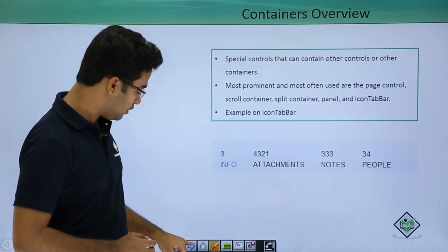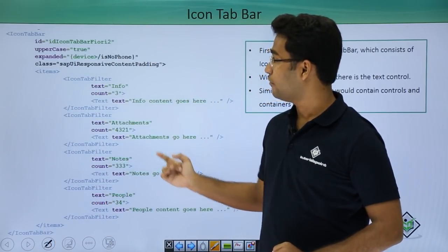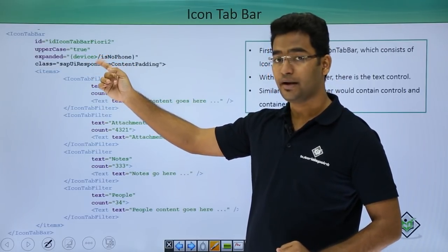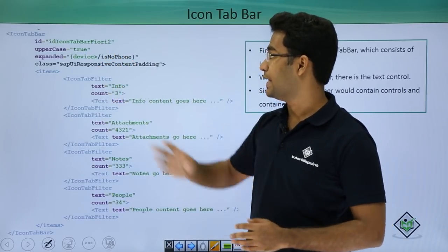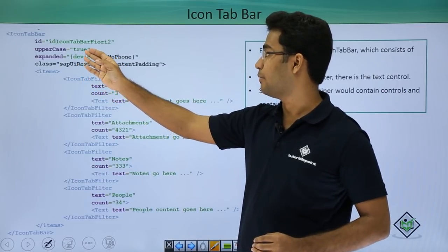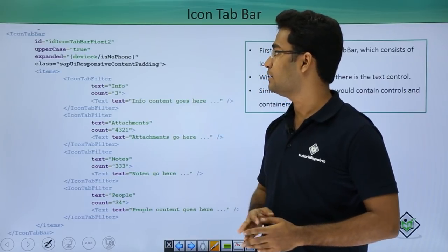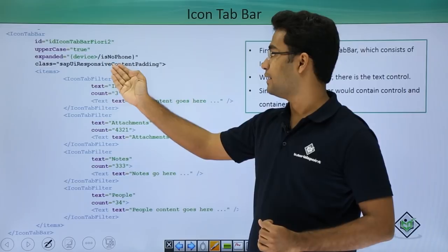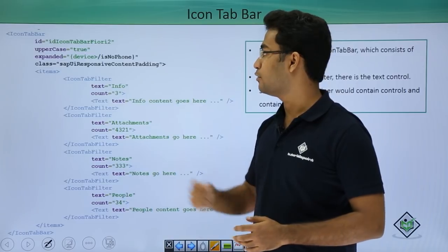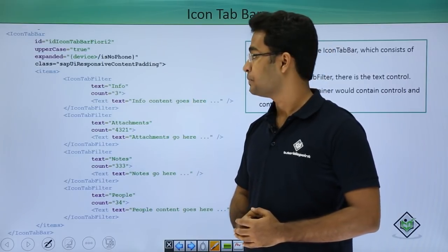Let me show you the code example. Here I have opened the icon tab bar — this is the controller itself. For that I need to write sap.m.IconTabBar. I have provided the properties: id (uppercase) and expanded. The id is 'idIconTabBarFury2', uppercase is true, expanded is device is not phone, and the class is sapUiResponsiveContentPadding — a predefined class that SAP has already provided.